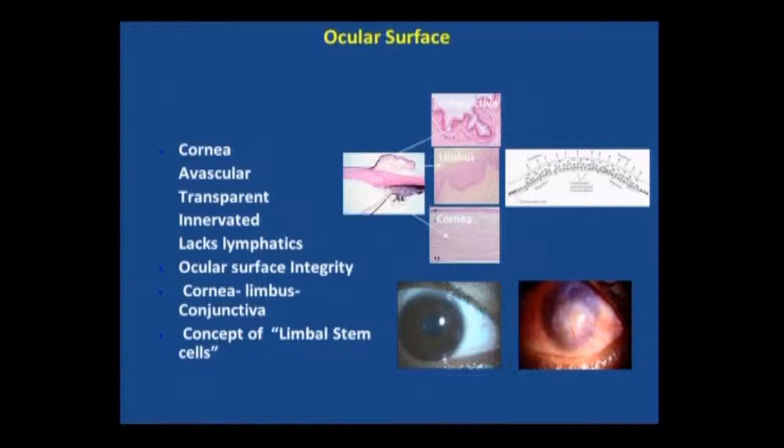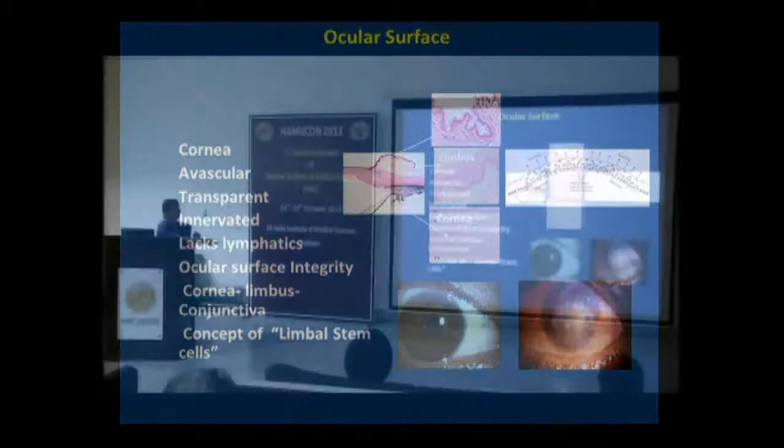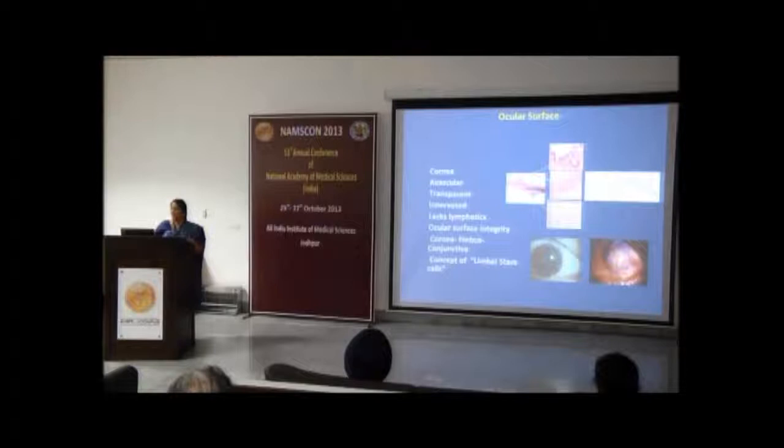If the cornea is damaged, you can do corneal transplantation. But what do you do if the limbus is damaged? I call it the line of control — the conjunctiva comes into the corneal surface, just like a neighbor crossing the border. When it comes, it brings along blood vessels and fibrous tissue, which you don't want on the cornea. Cornea has to be replaced by cornea; limbus has to be replaced by limbus. And where do you get this limbus from? You have to get it from the good eye if one eye is intact.